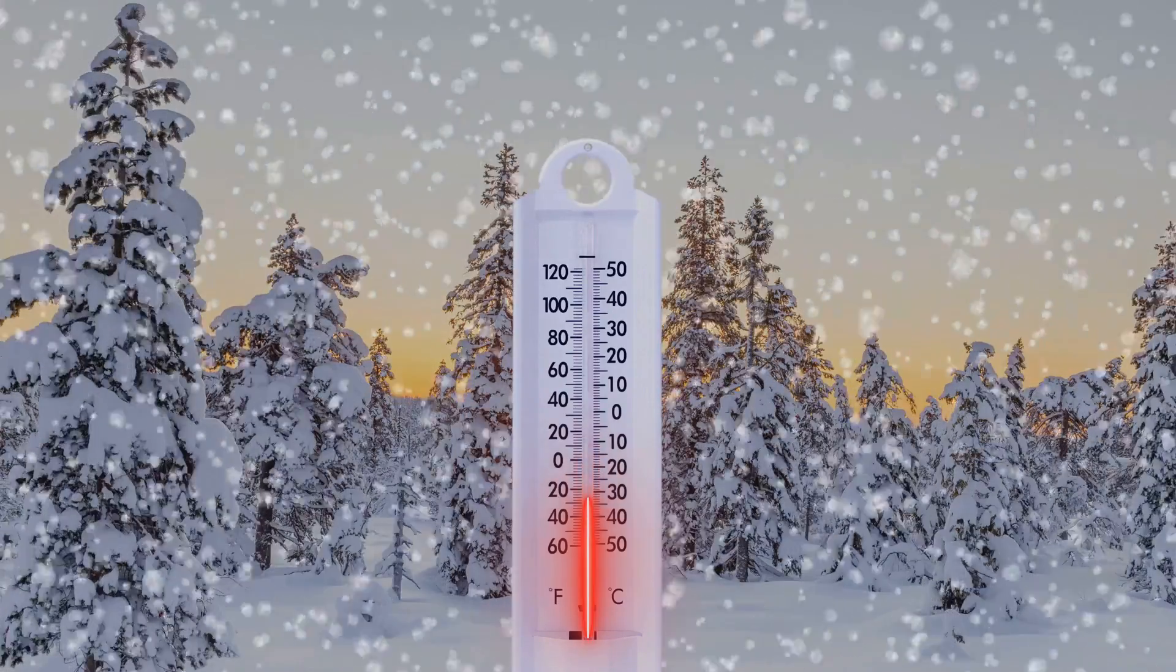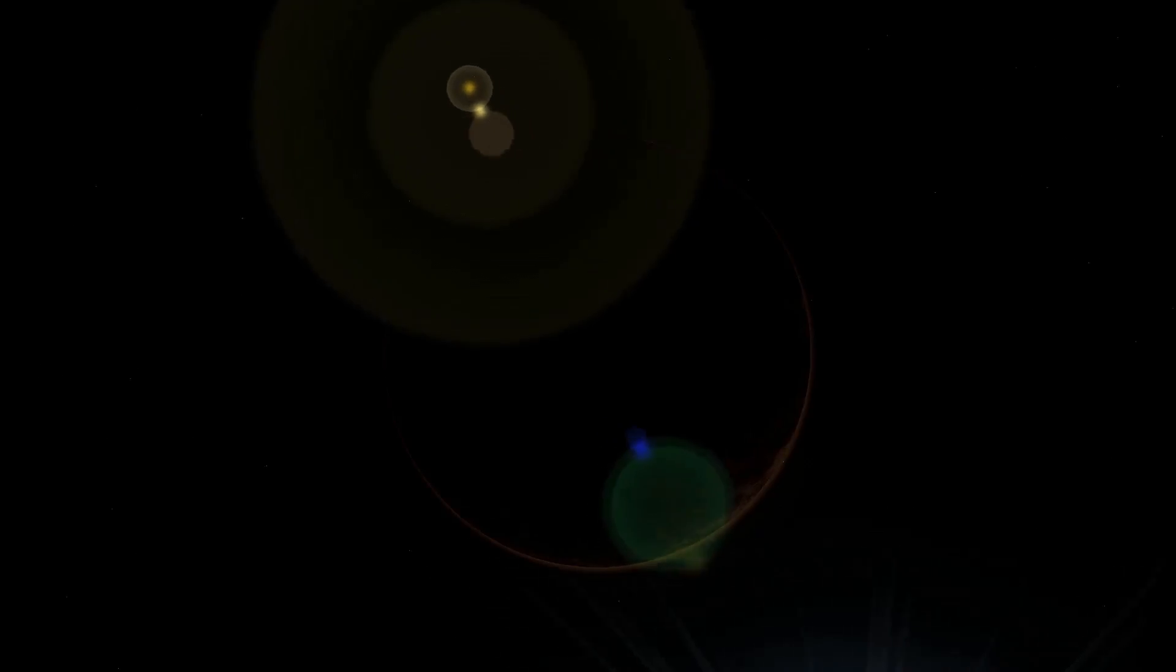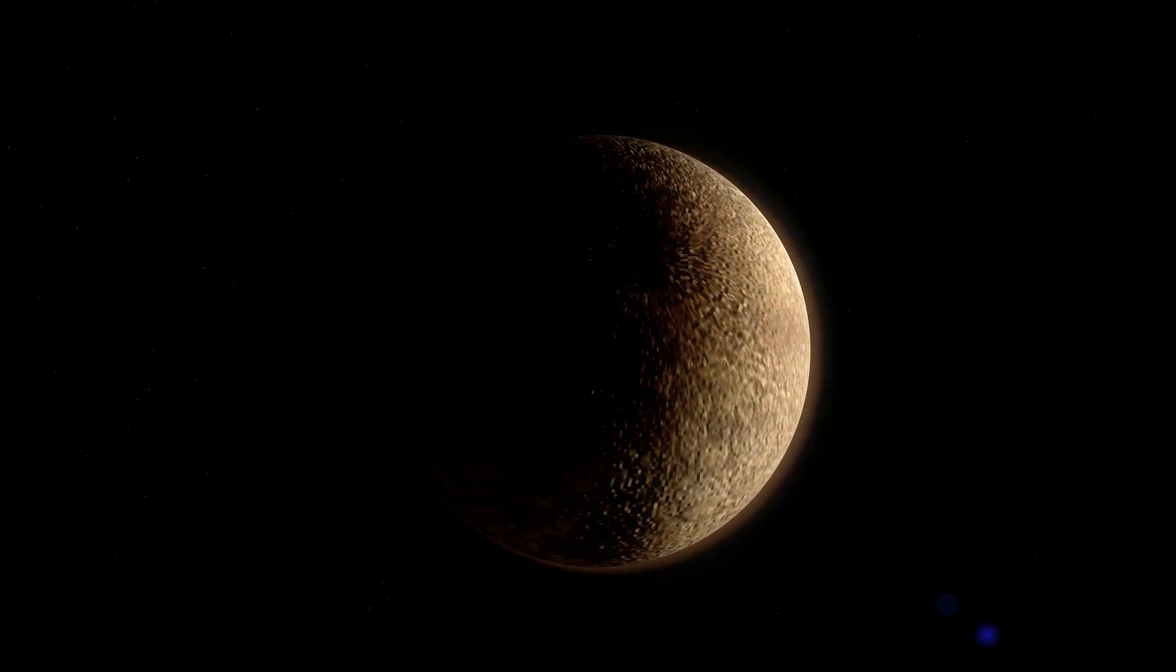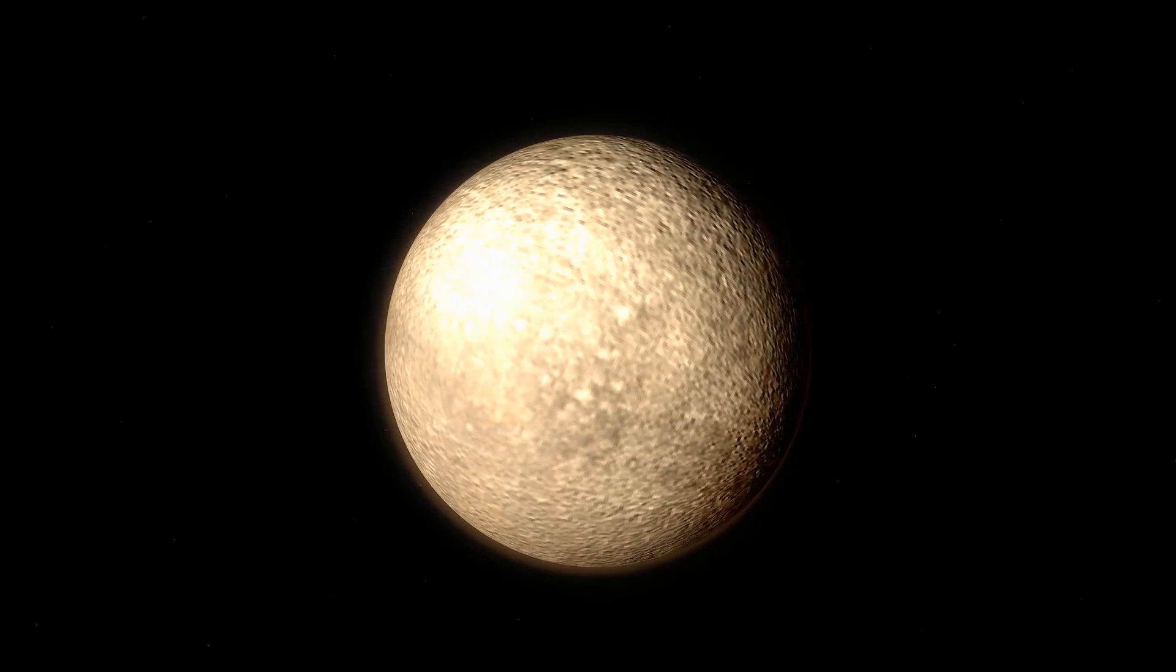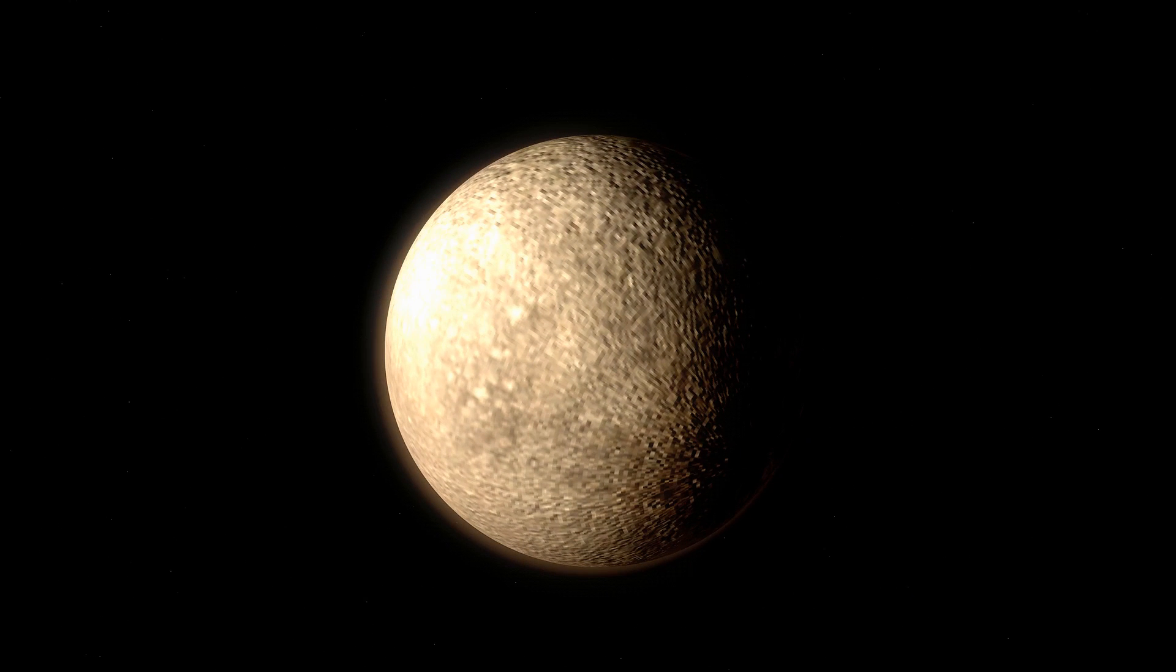The mercury, no pun intended, drops to a bone-chilling negative 290 degrees Fahrenheit. That's colder than the surface of Pluto, despite Mercury's close dance with the Sun.